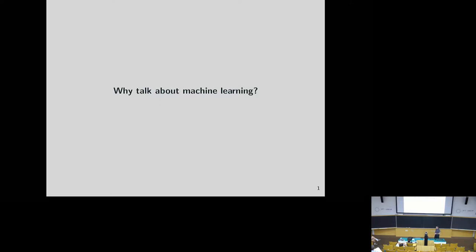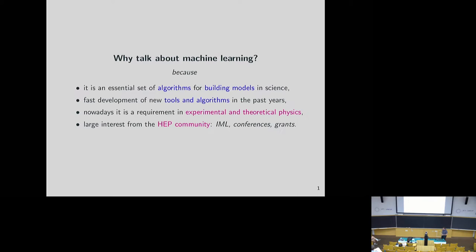Preparing this talk is a little bit complicated, in particular if you are a theoretical physicist, because you have to motivate: what is machine learning? Why are we talking about machine learning? Today we have essentially machine learning everywhere, in particular in experimental physics, and also in many applications in the real world. Machine learning is a set of algorithms used for building models in science, with a lot of interest from the experimental and theoretical community. At CERN, we have conferences, workshops, working groups, and grants based on that.